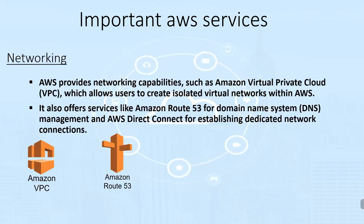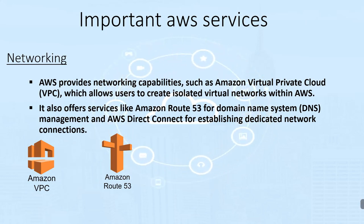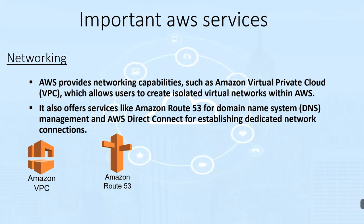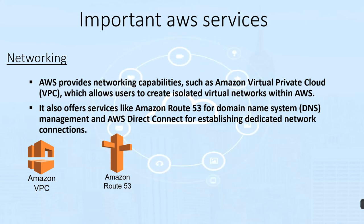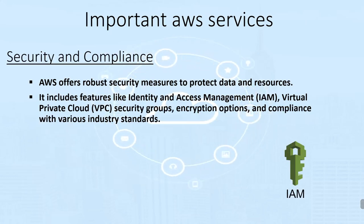Networking: AWS provides networking capabilities such as AWS Virtual Private Cloud, that is VPC, which allows users to create isolated virtual networks within AWS. It also offers services like AWS Route 53 for domain name system, DNS, management, and AWS Direct Connect for establishing dedicated network connections.